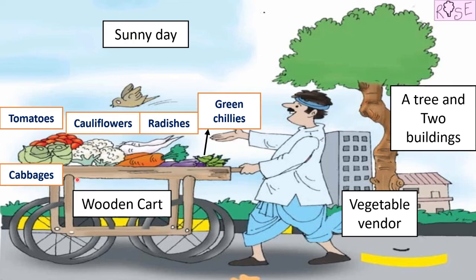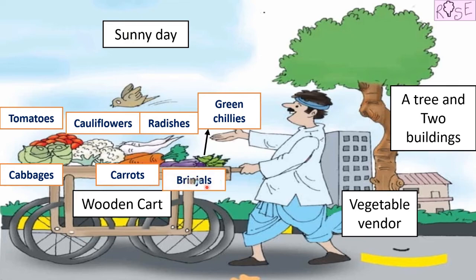These are called cabbages. And what else do we have in this beautiful wooden cart? There are so many vegetables! So what else do we have? We have two carrots — one is here and one is right here. We have two carrots and some brinjals. So the vegetables this vendor is selling are: tomatoes, cauliflower, radishes, green chillies, brinjals, carrots and cabbages. Wow!